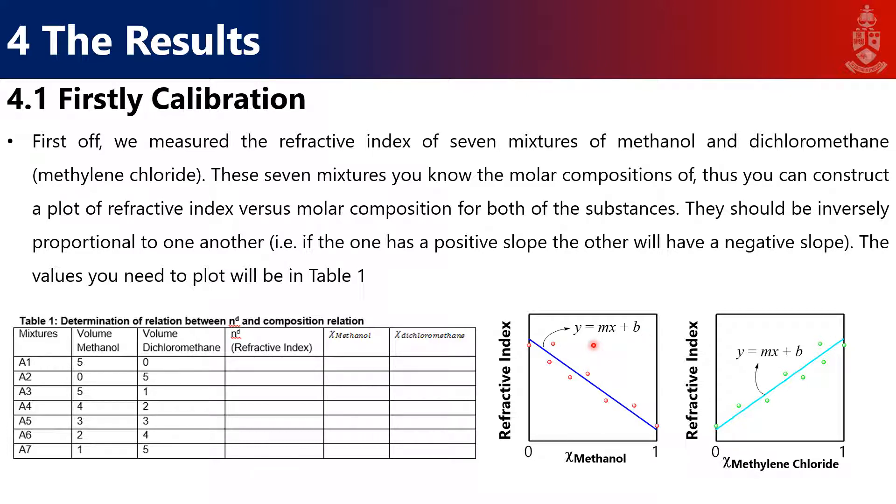This gives you a calibration graph from which you can take any refractive index of a mixture, look it up, and get the mole fraction of methanol present. Then you can get the mole fraction of methylene chloride from that, or vice versa. That is why you need these calibration curves—to construct other plots from that information.